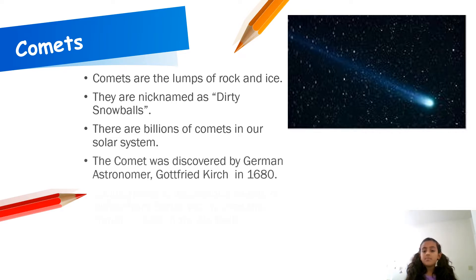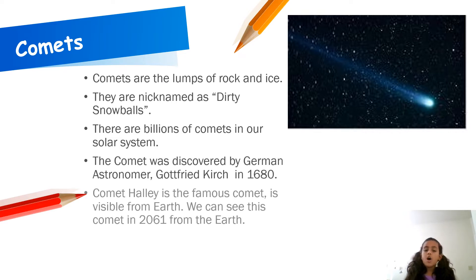The comet was discovered by German astronomer Gottfried Kirch in 1680. Comet Halley is the famous comet. It is visible from Earth. We can see this comet in 2061 from the Earth.